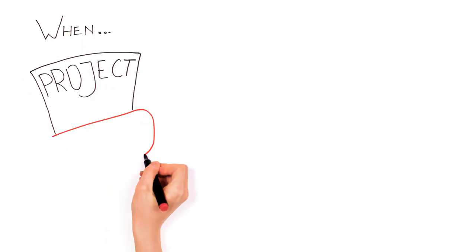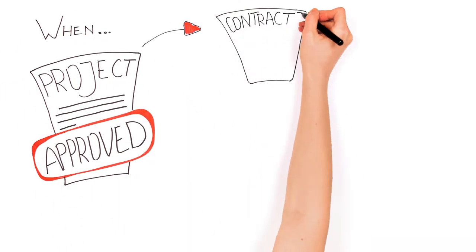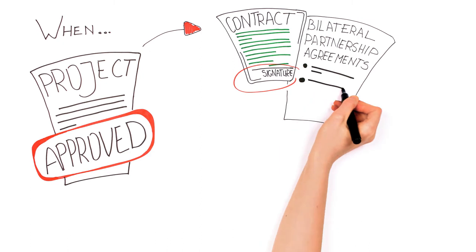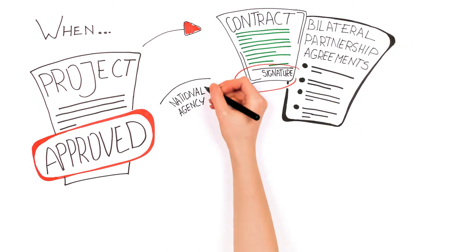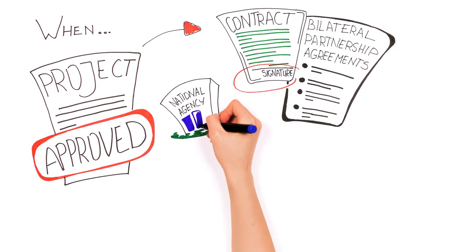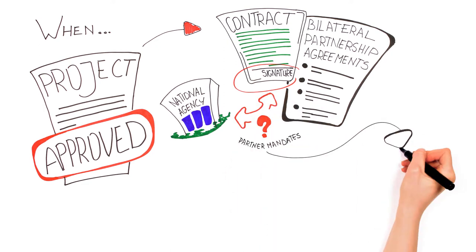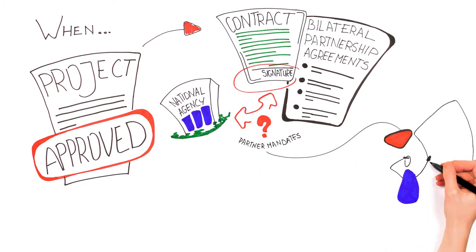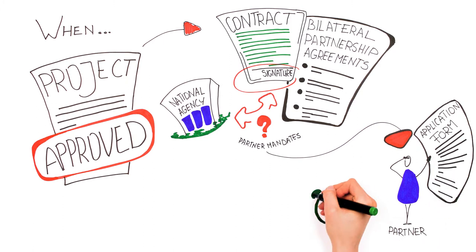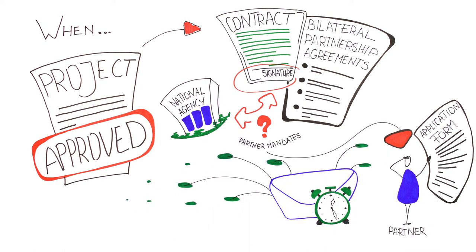When your project is approved, it's time to consider contract signing and bilateral partnership agreements. Clarify with the national agency whether they require original partner mandates before the contract is signed. If so, the applying partner should make sure there is sufficient time for the mail to arrive from more remote regions. Sometimes it can take up to one month or more.